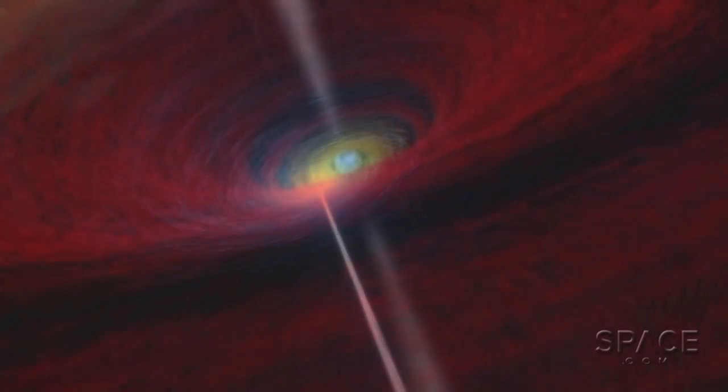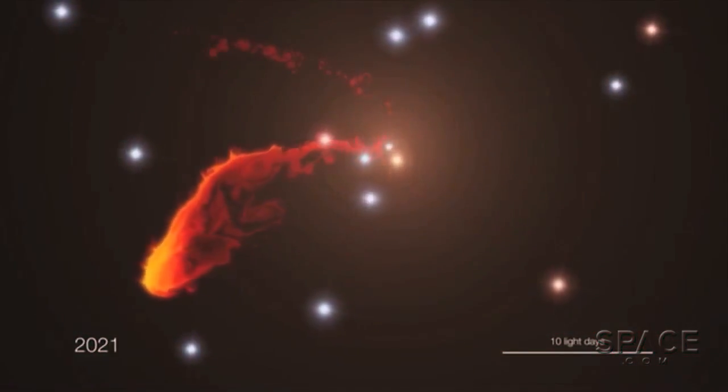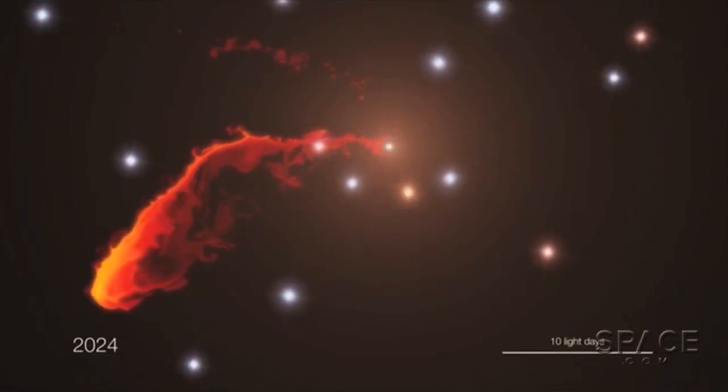How fast a supermassive black hole spins may indicate what it fed on, and how often it went to dinner. Every large galaxy is believed to contain a supermassive black hole at its center.